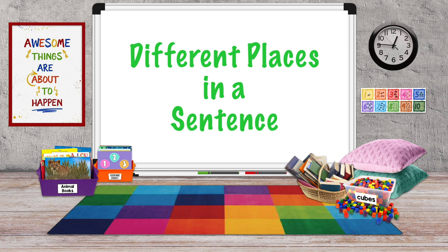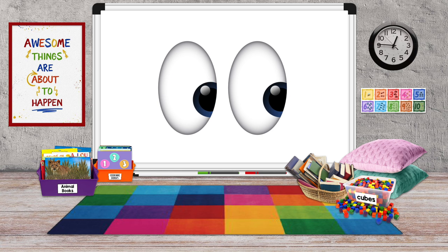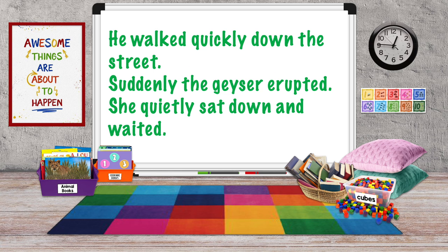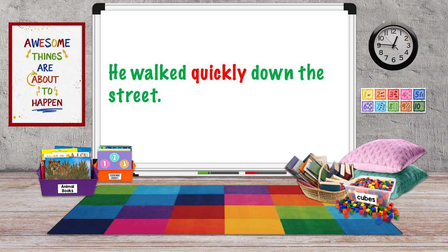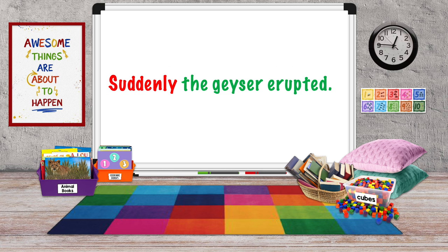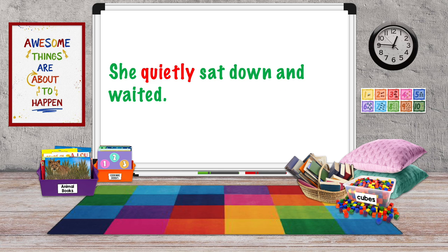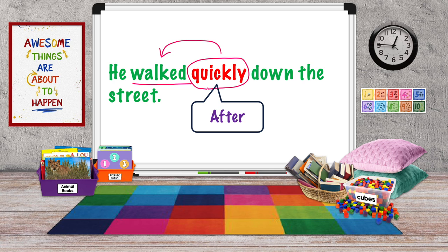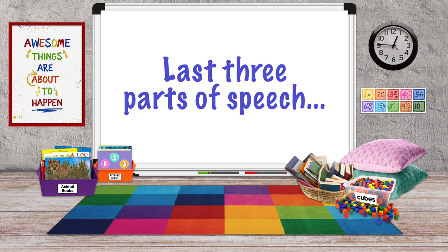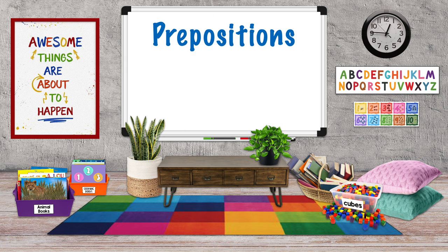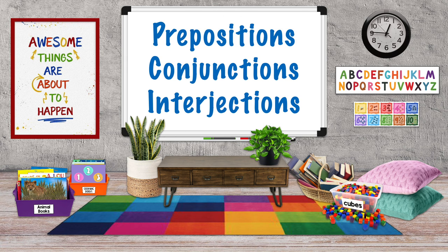Adverbs can also be in different places in a sentence. Look at our three sentences again and notice where the adverbs are: She walked quickly down the street. Suddenly, the geyser erupted. She quietly sat down and waited. Adverbs can come before or after the word they describe. That brings us to our last three parts of speech: prepositions, conjunctions, and interjections.